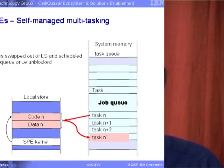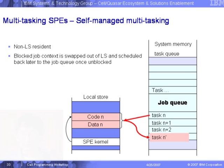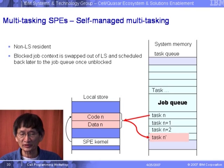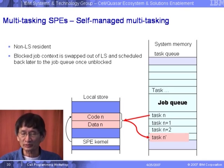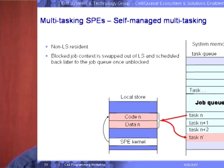For Cell-managed multitasking, again we have an SPE kernel running here with a job queue that queues a number of tasks. Based on events happening in the SPE kernel, we can DMA the code and data down to the SPE and run it through.